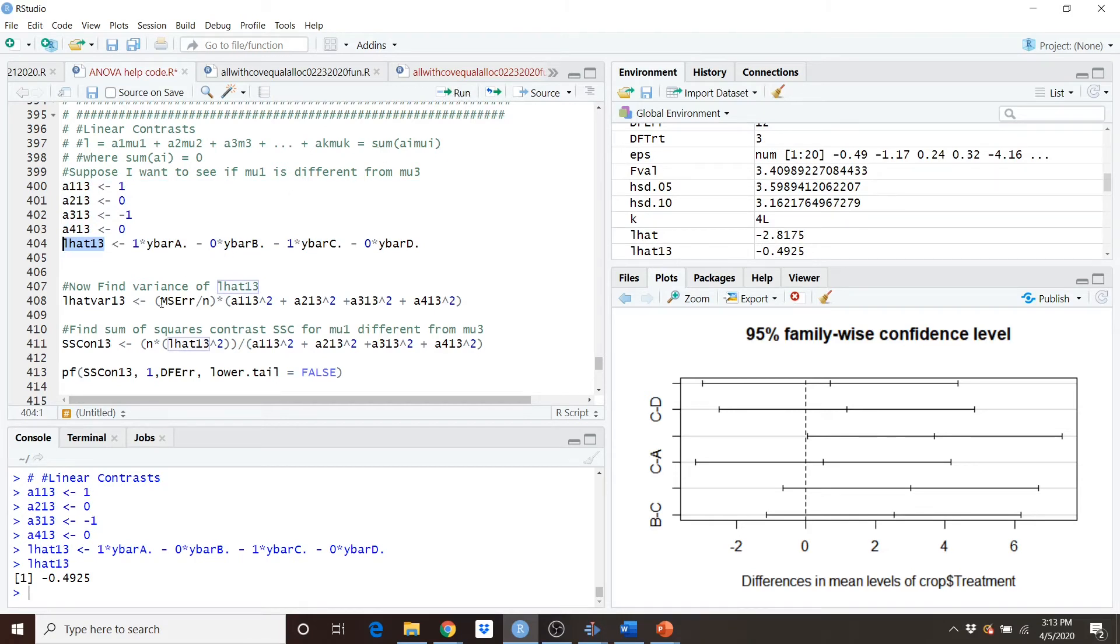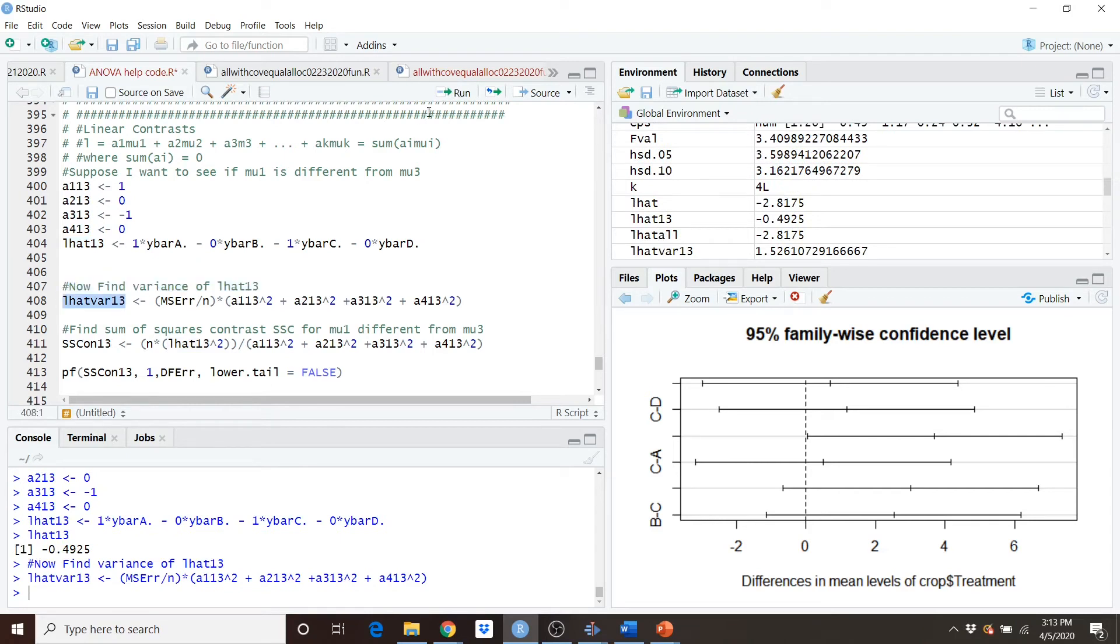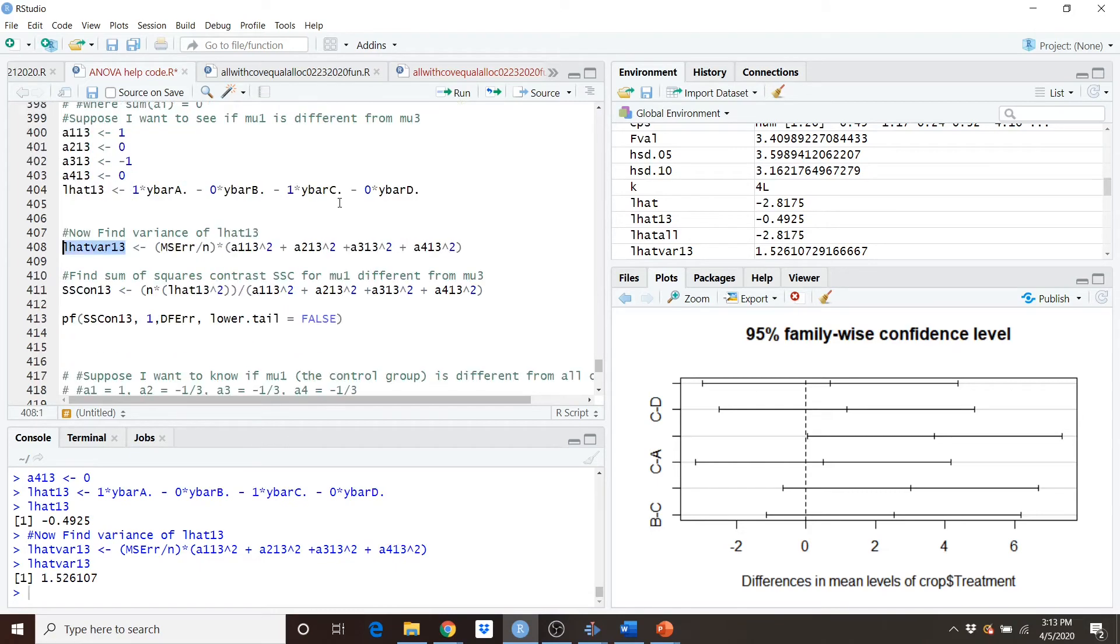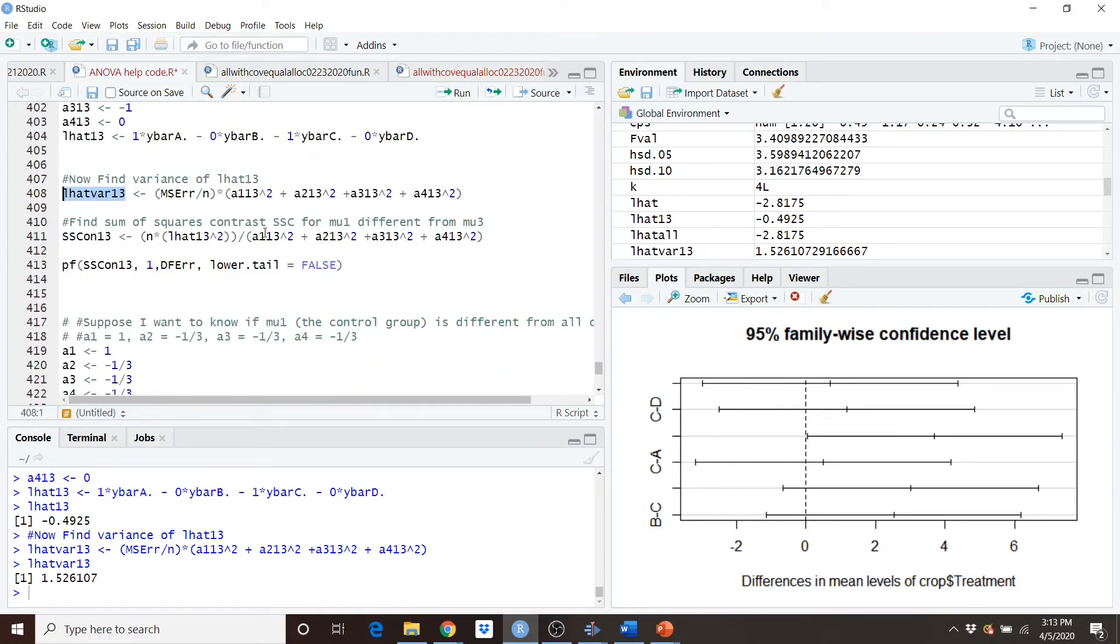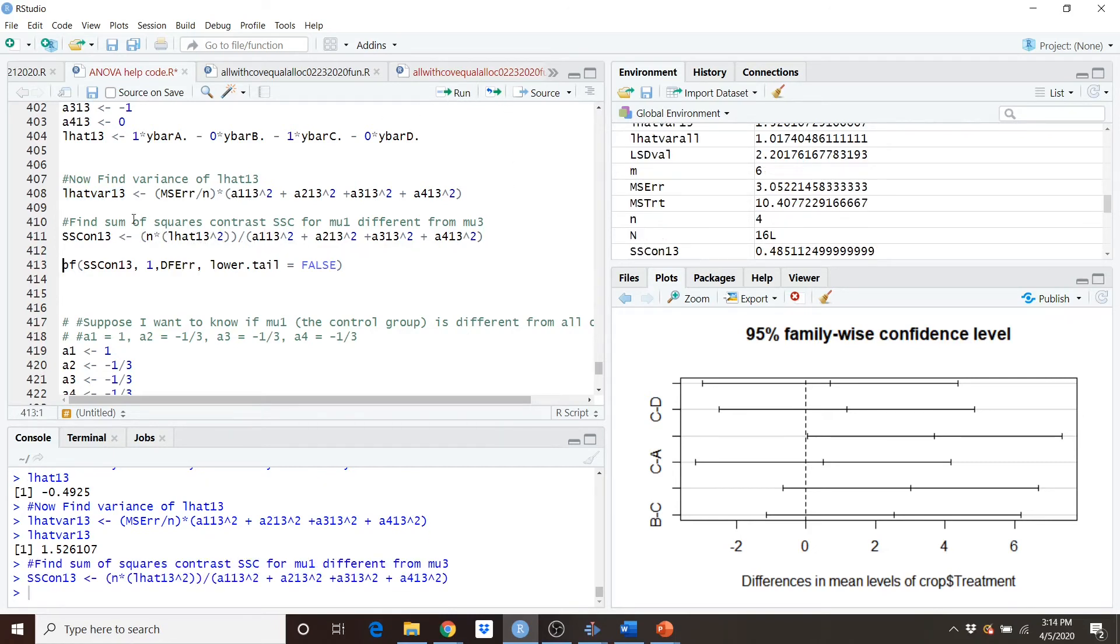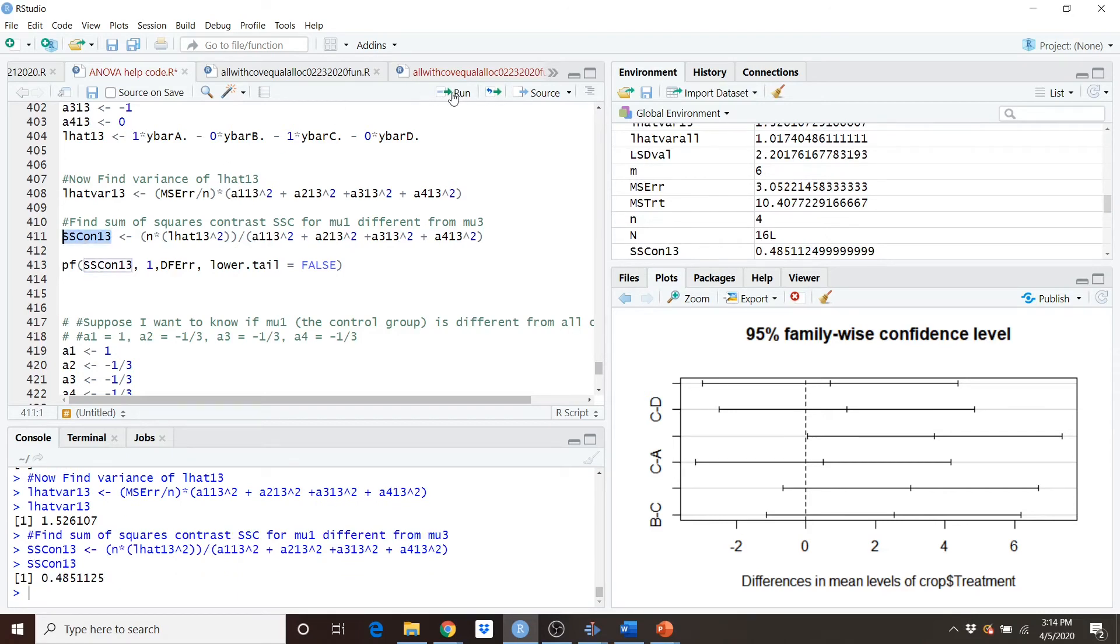I now need to find the variance of l hat. Notice mean square error divided by n times the sum of my contrasts. And so the variance for my contrasts will then be 1.526107. So in order to find the sum of squares contrasts for the difference in mu1 and mu3, I simply take n times the squared contrast divided by the sum of the squared contrasts. And I get a sum of squared contrast for mu1 minus mu3 to be 0.4851125.